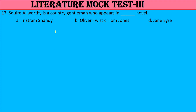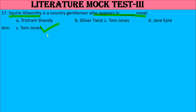Question 17: Squire Allworthy is a country gentleman who appears in which novel? Options: Tristram Shandy, Oliver Twist, Tom Jones, Jane Eyre. Jane Eyre is in 'Jane Eyre'; Tom Jones is in 'Tom Jones'; Oliver Twist is in 'Oliver Twist'. The right answer is 'Tom Jones' — Squire Allworthy is a country gentleman and a main character in 'Tom Jones' by Henry Fielding.